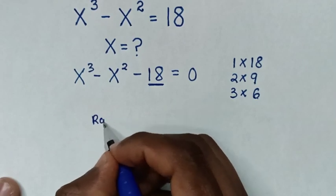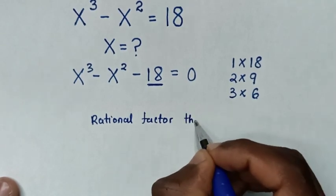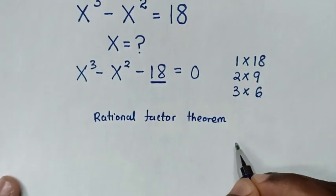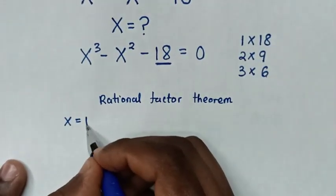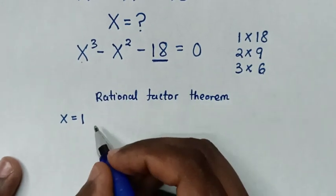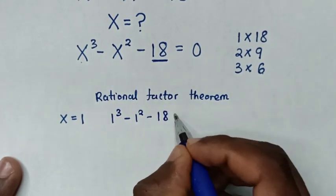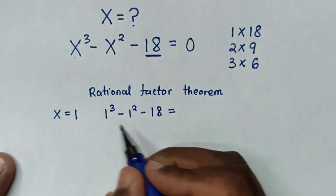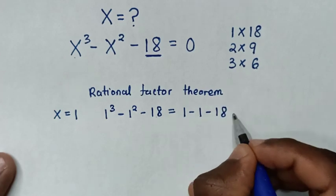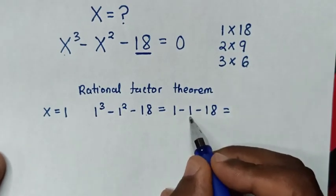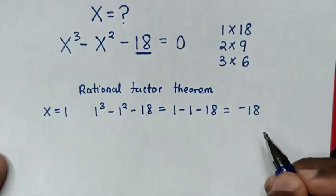Now from the rational factor theorem, we test for the value of x is equal to 1. We substitute 1 in here: 1³ minus 1² minus 18 equals 0. So 1 minus 1 is 0, minus 18 is negative 18, which is not equal to 0.